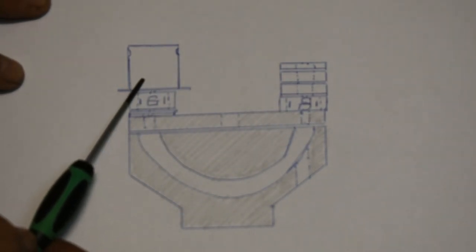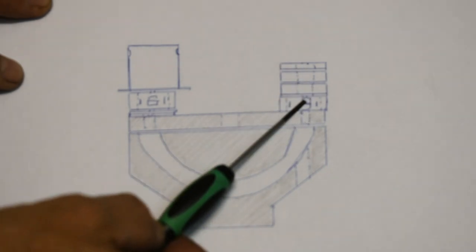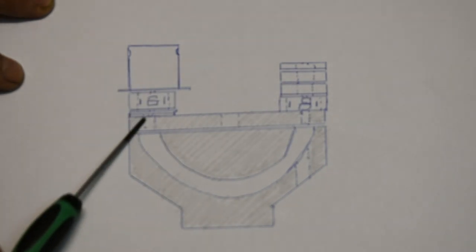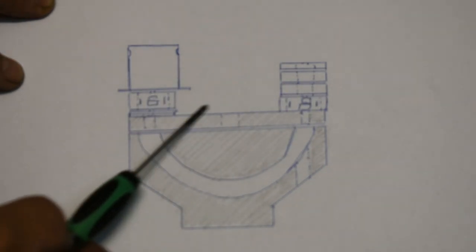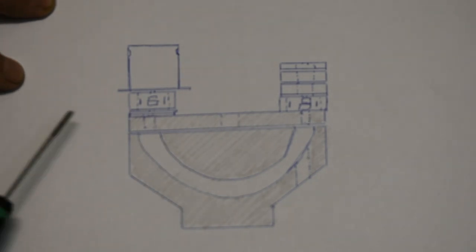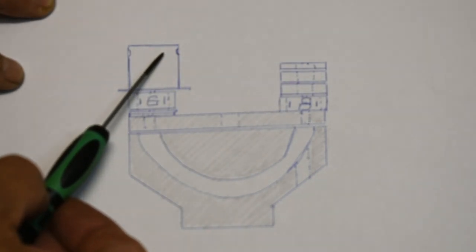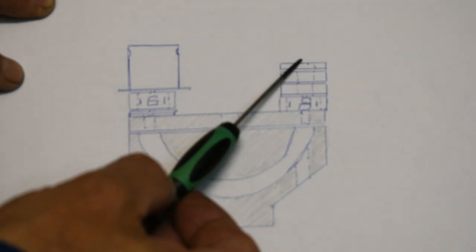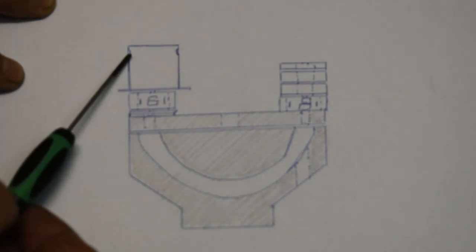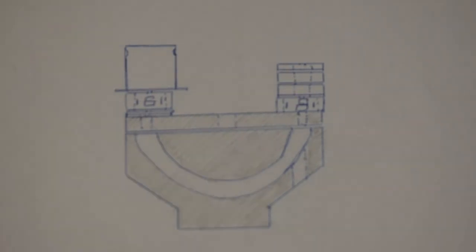And we have these two collimating electrostatic lenses here and here with the deflection plates as well. But no obvious source for electrons or detectors. Very interesting.